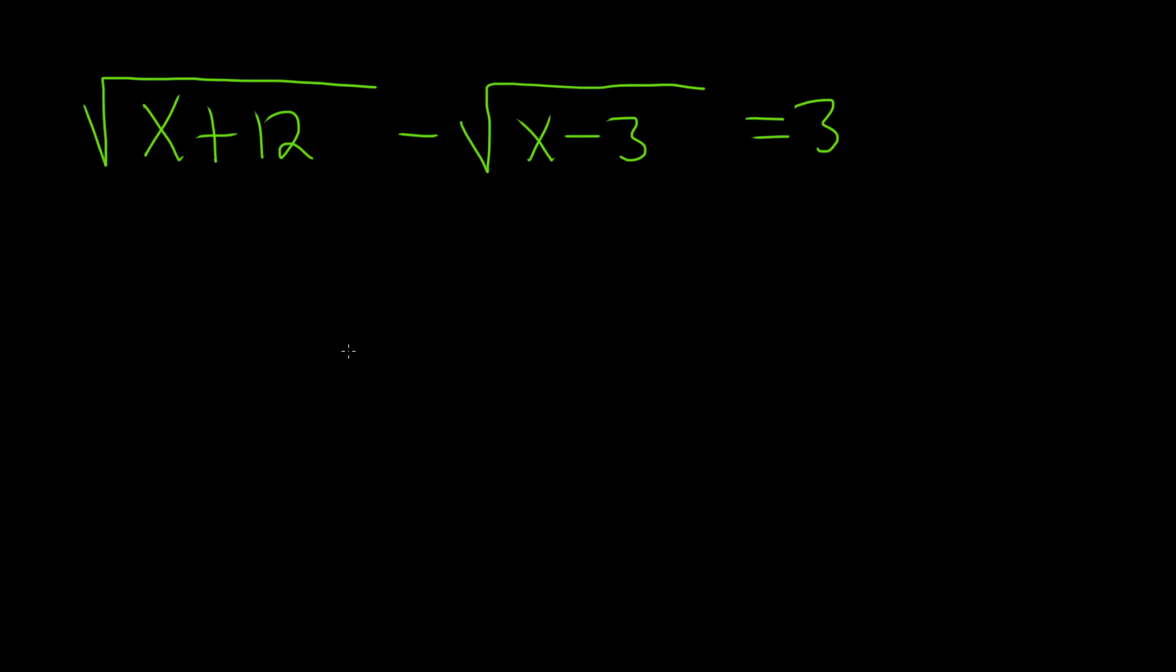In this problem, we have an equation with two square roots, and we're going to try to solve for x. The strategy is, basically, you have to get rid of all the square roots.